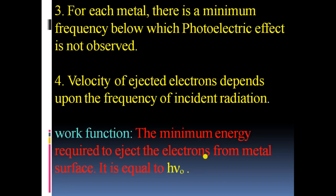Fourth observation: the velocity of ejected electrons depends upon the frequency of incident radiation. There is a term called work function — the minimum energy required to eject electrons from the metal surface. It is equal to hν₀, where h is Planck's constant and ν₀ is the threshold frequency. Threshold frequency is the minimum frequency below which there will be no ejection of electrons from the metal surface.